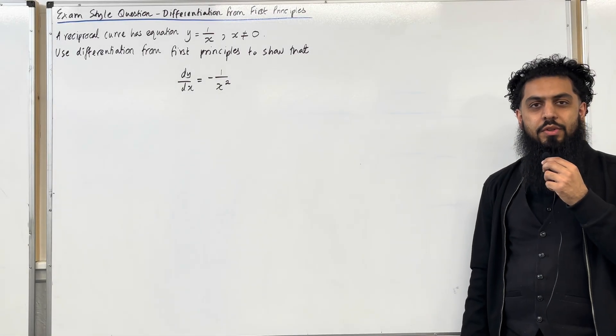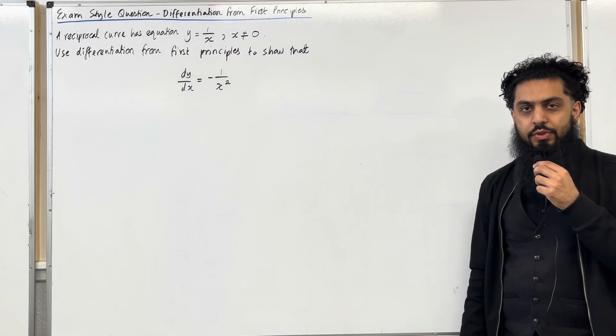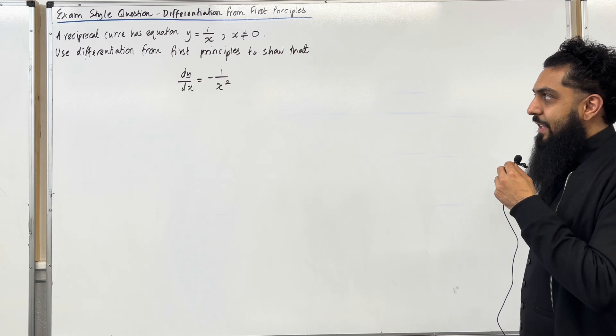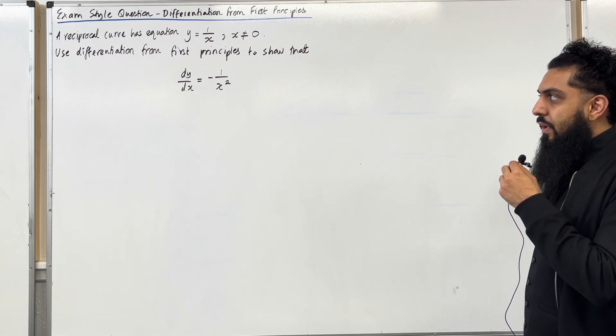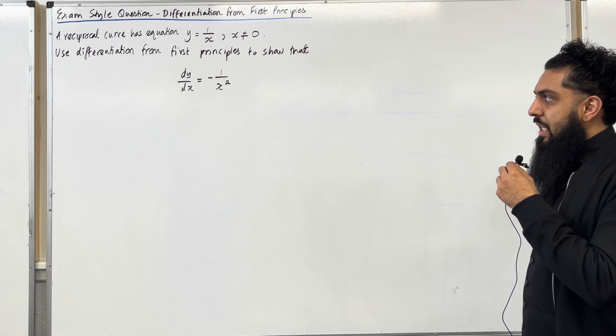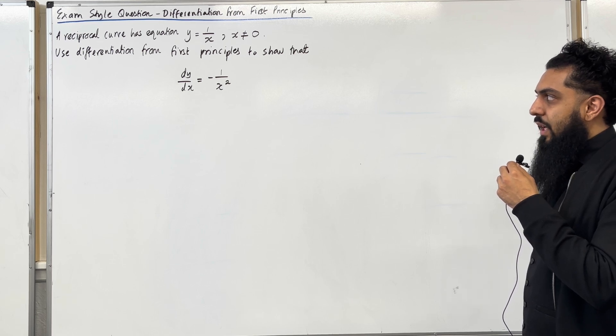Here is an exam study question on differentiation from first principles. A reciprocal curve has equation y equals 1 over x where x is not equal to 0. Use differentiation from first principles to show that dy over dx is equal to minus 1 over x squared.